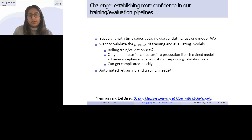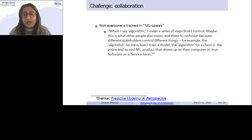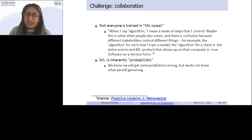Another challenge in this confidence, establishing confidence is the automated retraining and tracing. So like, when do we retrain? Do we just retrain every single day? And how do we keep track of all of these artifacts that come out? Another challenge here is in collaboration. So, I mean, you kind of need to be pretty technical to understand like, all right, like when is the model drifted? Why is it drifted? What are the causes of that drift? And not everyone is trained in ML speak, right? Like when I say algorithm, I mean a series of steps that I control. So when a product manager says algorithm, maybe they mean something different from when the client says algorithm from when the data scientist or the engineer says algorithm. And ML is like inherently probabilistic. So some examples might not get classified correctly. And how do you kind of communicate that? How do you build trust with clients and teach them to kind of work with that inherent uncertainty? It's hard to communicate that for sure.